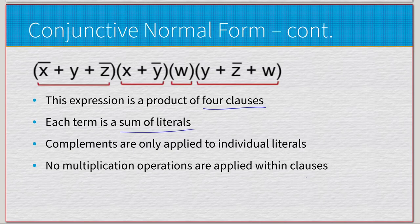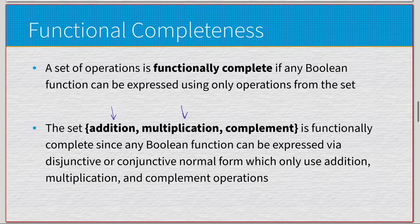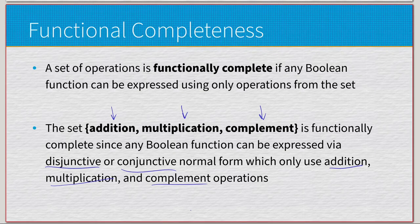These two forms are closely tied to the idea of functional completeness. Any Boolean expression can be expressed through either disjunctive normal form or conjunctive normal form. Functional completeness means a set of operations using which any Boolean function can be expressed. The set {addition, multiplication, complement} is functionally complete because any Boolean expression can be displayed in DNF or CNF, and those forms use exactly those three operations.